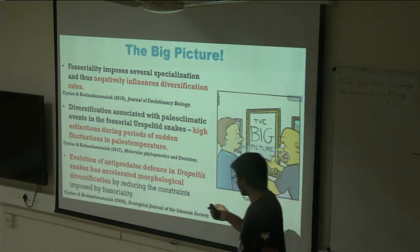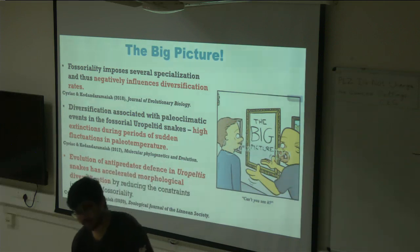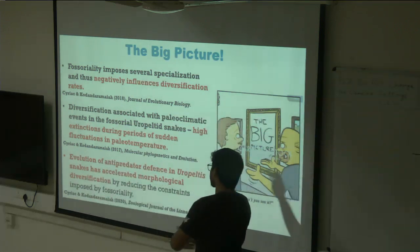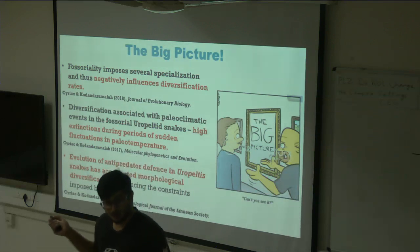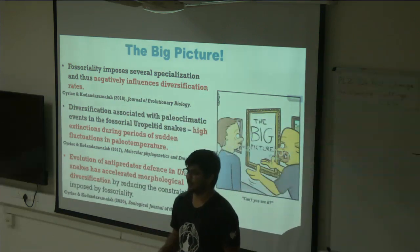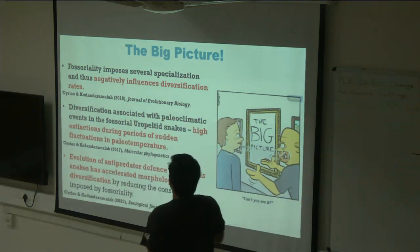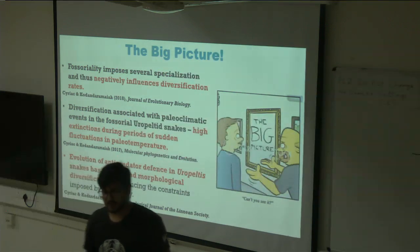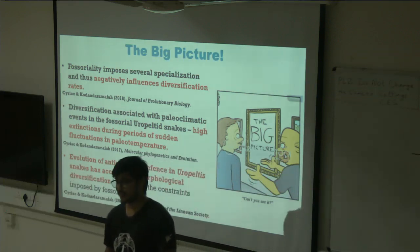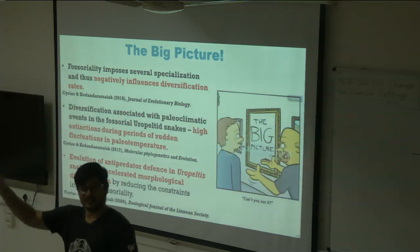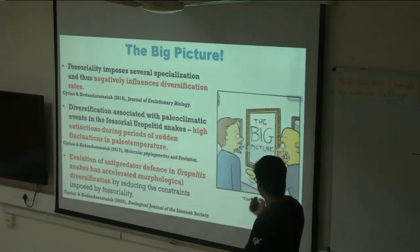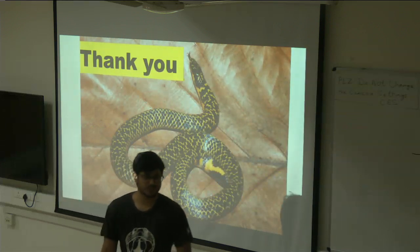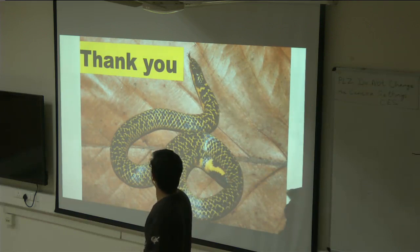The big picture: fossoriality has a negative influence on diversification rates of snakes. Fossorial snakes experience lower speciation rates and higher extinction rates, and because they're so specialized, they're very susceptible to environmental changes — any sudden fluctuation causes a peak in extinction rates. However, the evolution of anti-predatory strategies like coloration could accelerate morphological diversification, leading to niche expansion and ultimately species diversification as well. Just by looking at the phylogeny, you can answer a whole bunch of different evolutionary questions. Thank you.